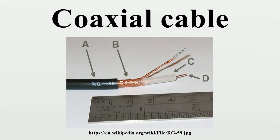Other shield designs sacrifice flexibility for better performance. Some shields are a solid metal tube. Those cables cannot be bent sharply, as the shield will kink, causing losses in the cable. For high power radio frequency transmission up to about 1 GHz, coaxial cable with a solid copper outer conductor is available in sizes of 0.25 inch upward. The outer conductor is rippled like a bellows to permit flexibility and the inner conductor is held in position by a plastic spiral to approximate an air dielectric.